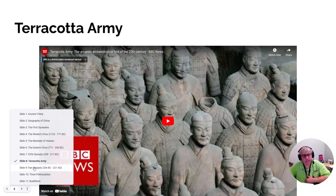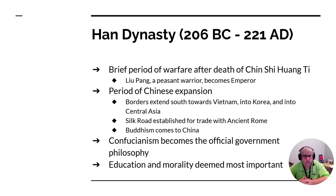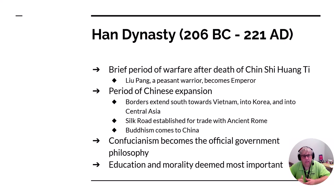After the Qin dynasty, we have the Han dynasty. After Qin Shi Huangdi dies, there is a brief civil war, and a man named Liu Bang becomes the next emperor, giving creation to the Han dynasty. The Han dynasty sees the largest period of Chinese expansion in history — the borders expand to Vietnam, Korea, and all the way into Central Asia. The Han dynasty also establishes the Silk Road, which becomes one of the primary trading routes between China and Europe.